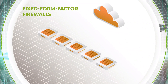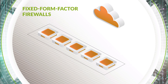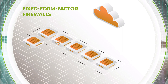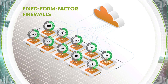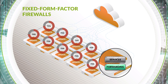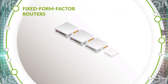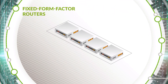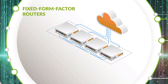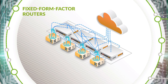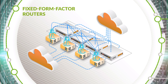Fixed form factor firewalls have a small footprint and scale well horizontally, but management complexity grows exponentially the more devices you add to the network. They're painful to upgrade and forwarding performance suffers when you turn on services. Fixed form factor routers have a small footprint and high forwarding performance, but no advanced security services unless tethered to security devices, once again adding management complexity.